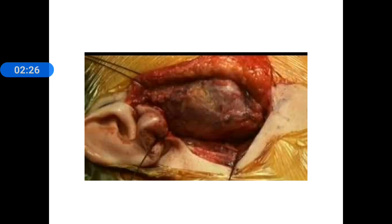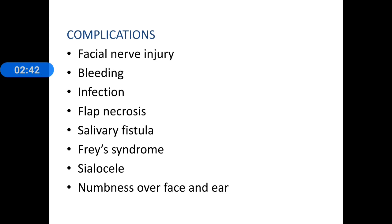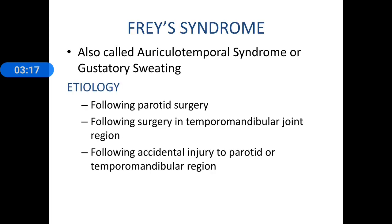This is how a tumor involving the superficial lobe of the parotid gland looks. Once you place the incision and raise the flaps, this is how the tumor looks. At this point you are not able to make out the facial nerve; you need to trace the main trunk and then start dissection of the gland. Among the complications, injury to the facial nerve is one of the more serious complications of parotid surgery. Bleeding and infection are other common complications. Then there is flap necrosis, salivary fistula, Frey's syndrome, sialocele — collection of saliva in the parotid bed — and occasionally numbness over the face and ear.